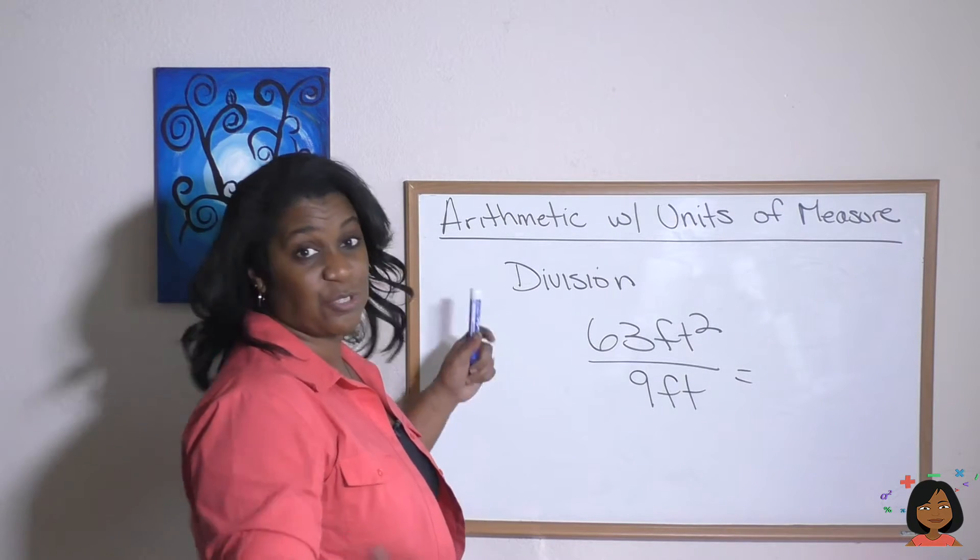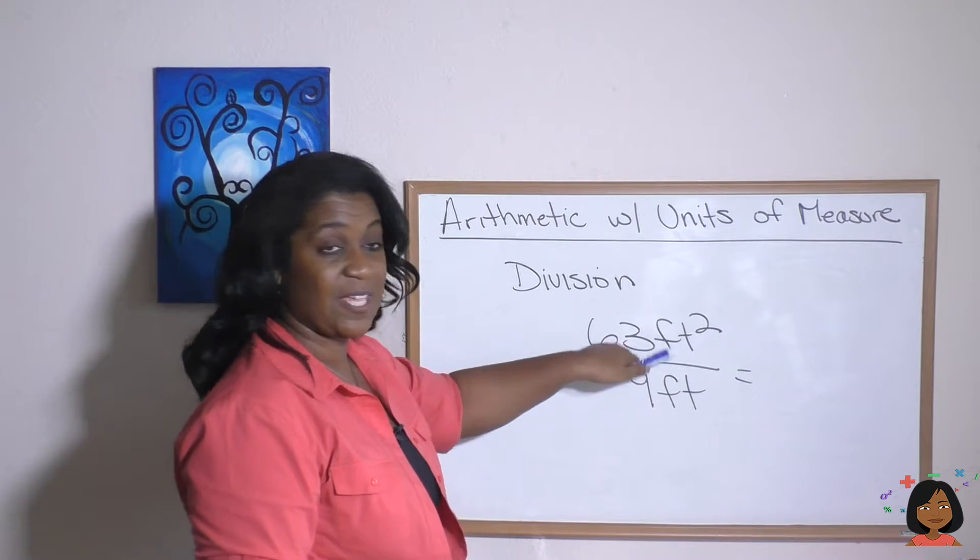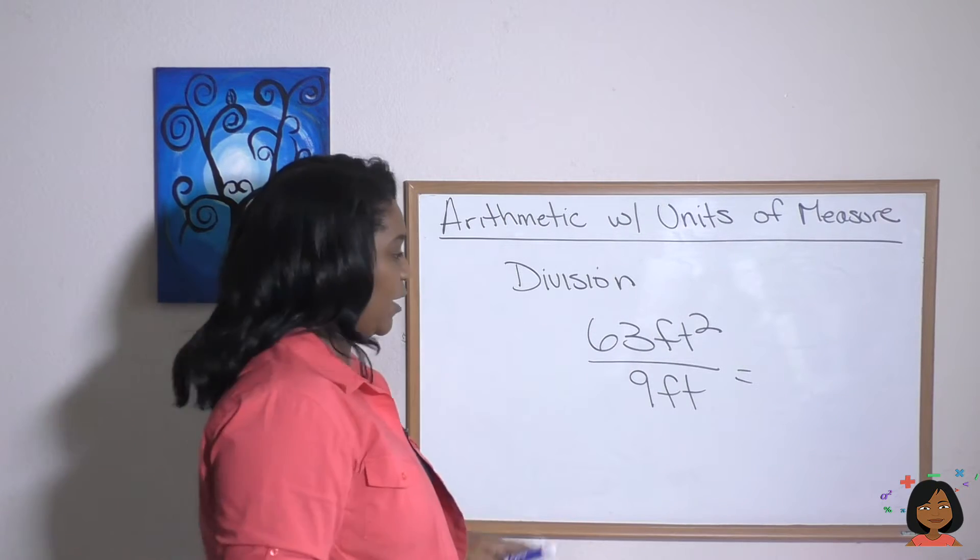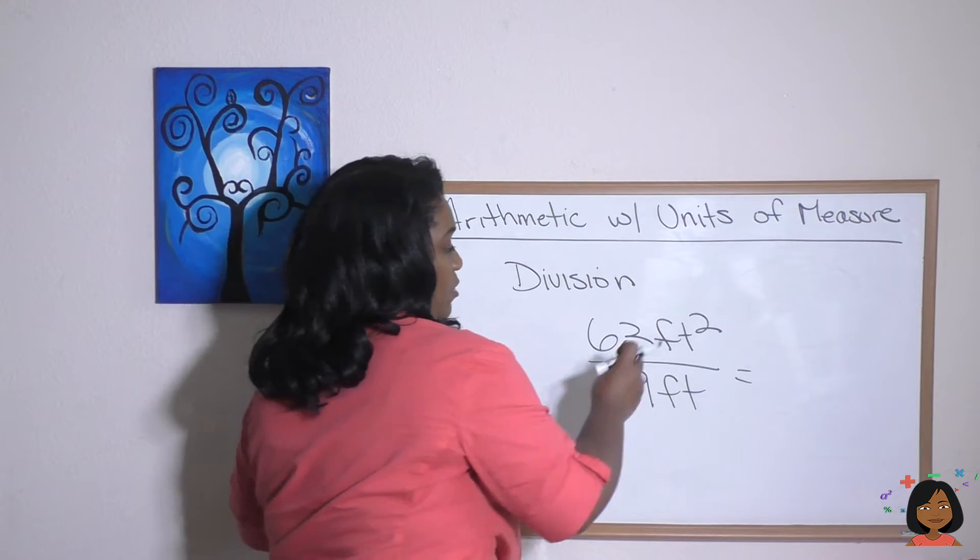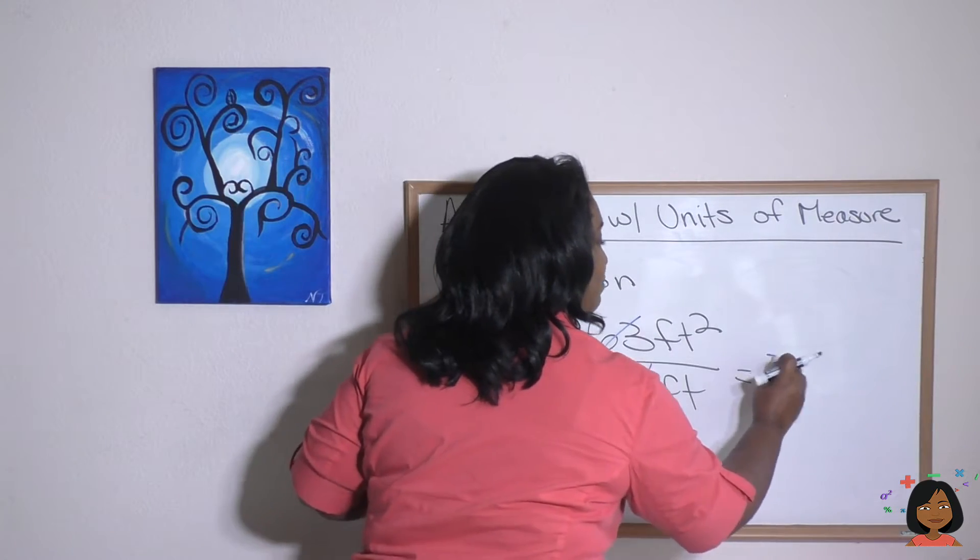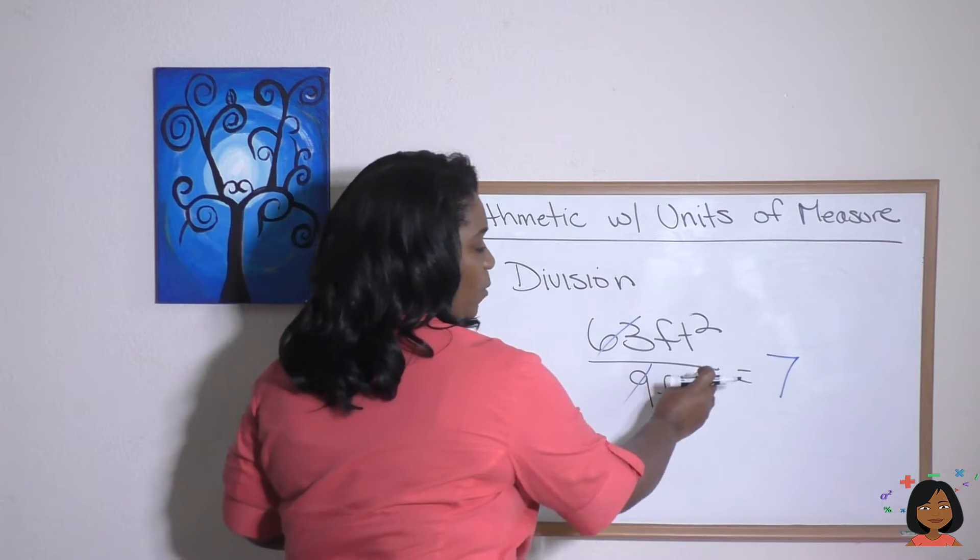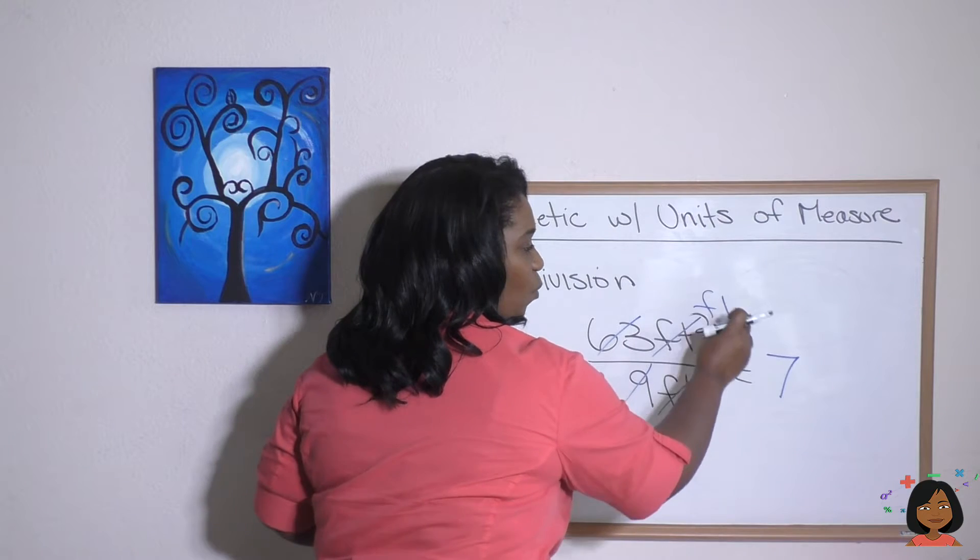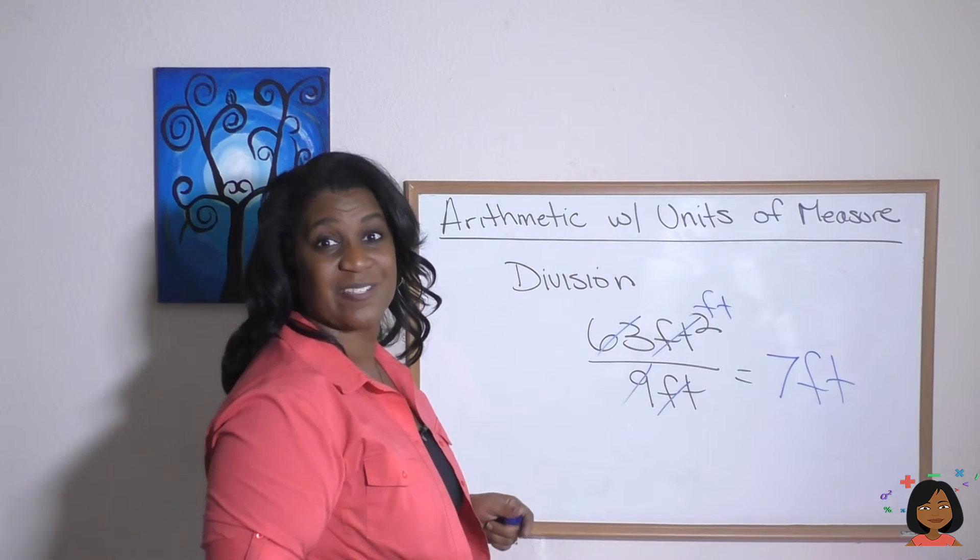Let's take a look at it without the drawing of a square and finding area. Really 63 feet squared. That's kind of like our area divided by nine feet. So first we do the numeric part, right? 63 divided by nine and we get seven. And then we have feet squared and we just have feet. We cross this out and we're left with just one feet. Seven feet would be that other side.